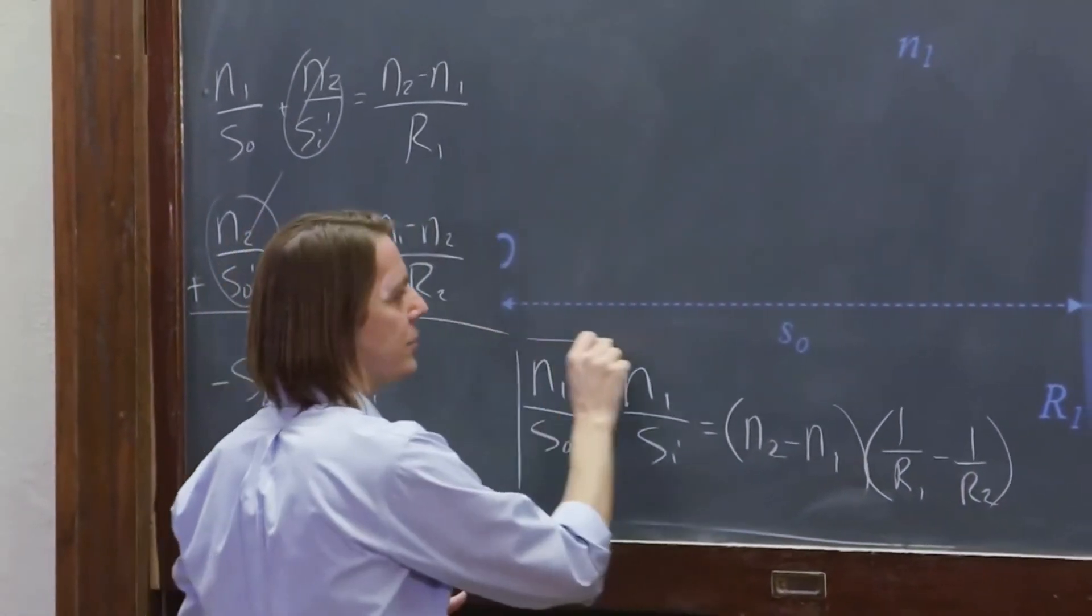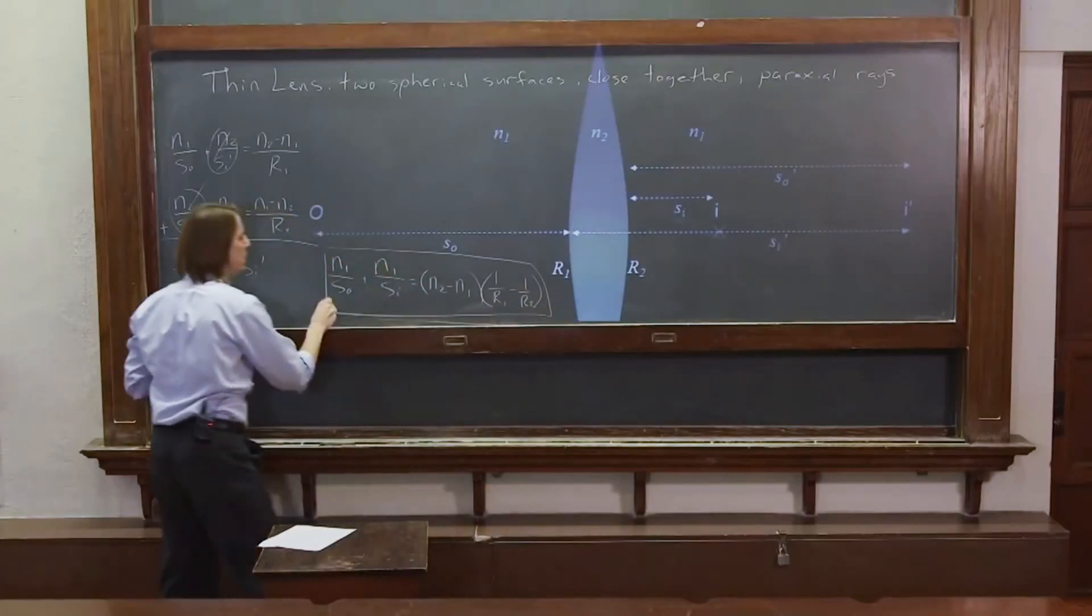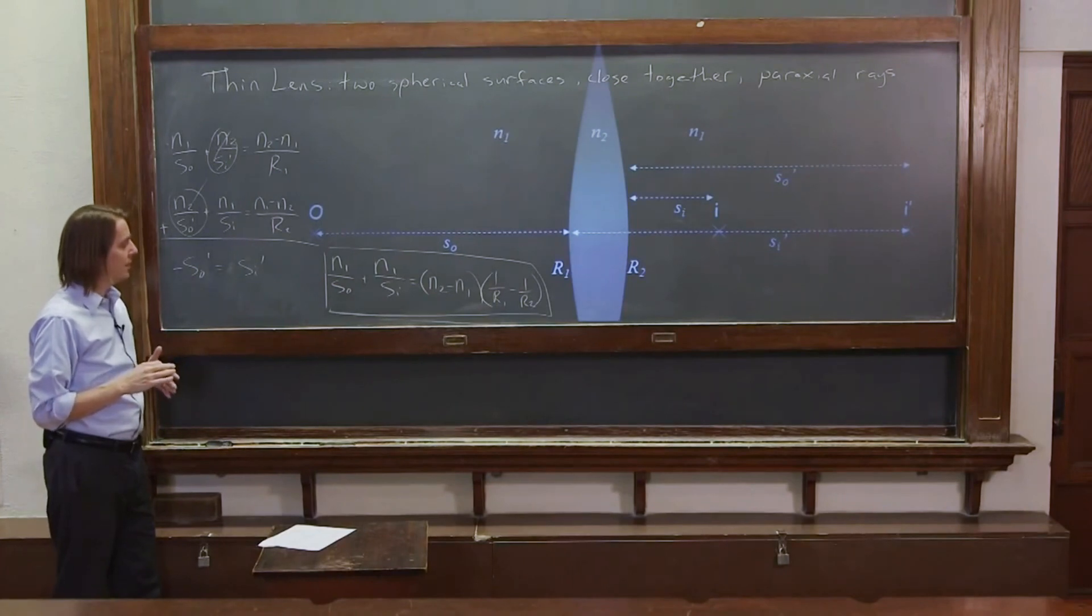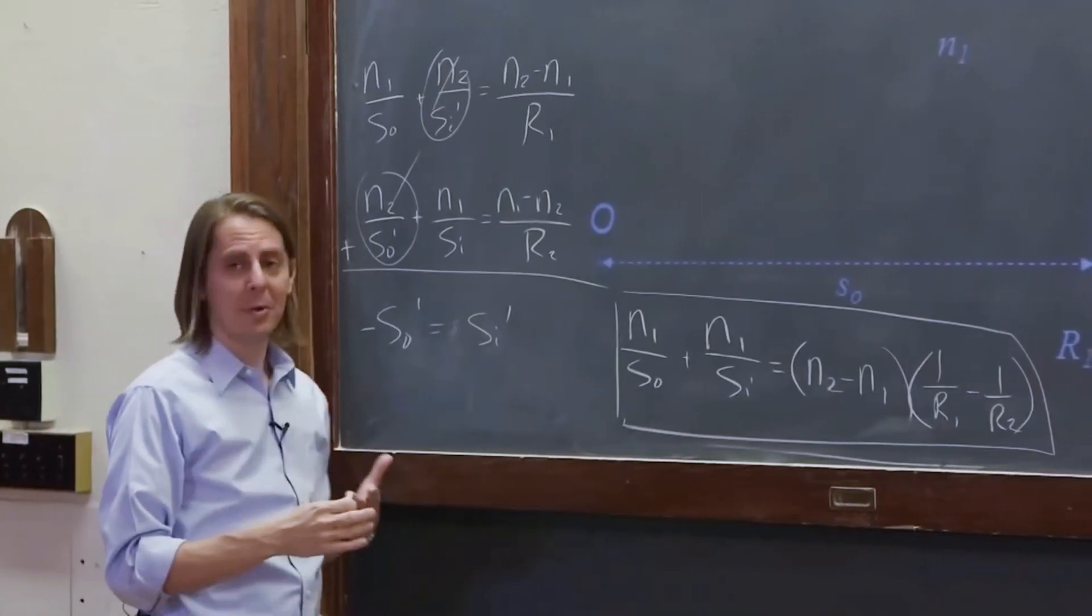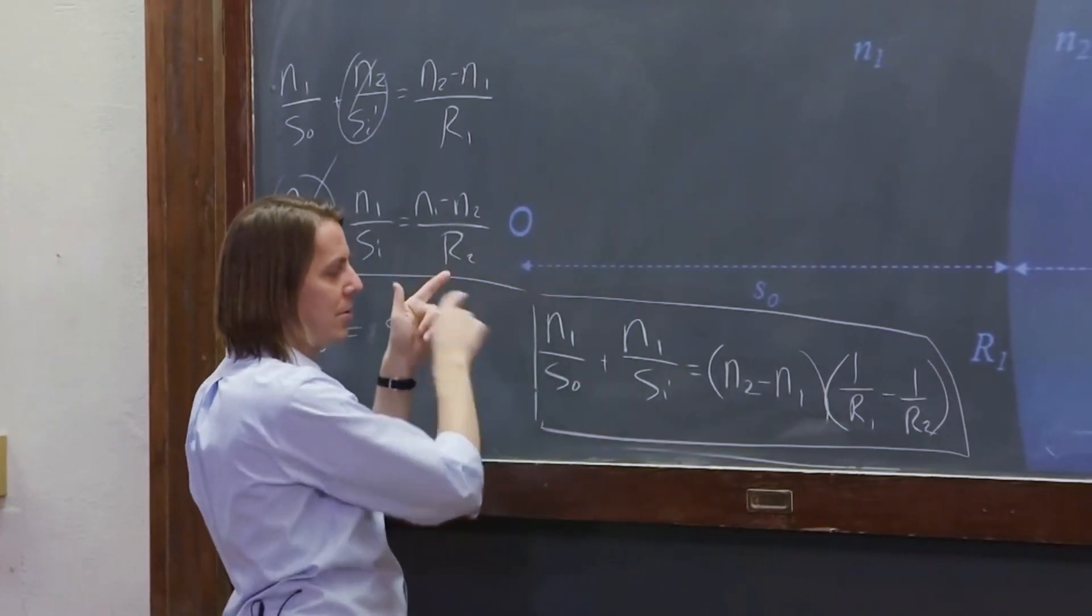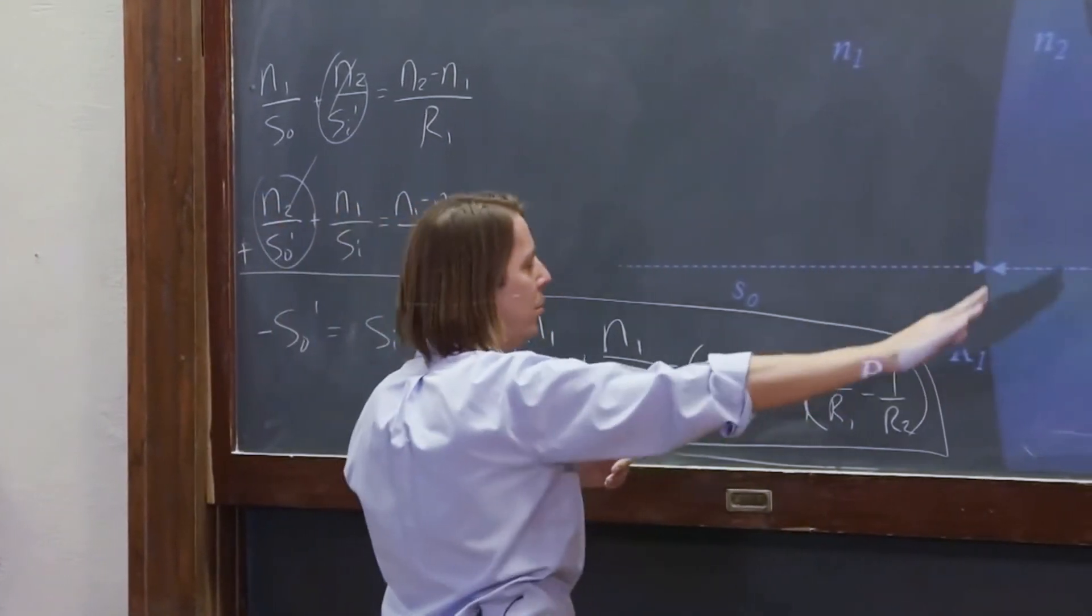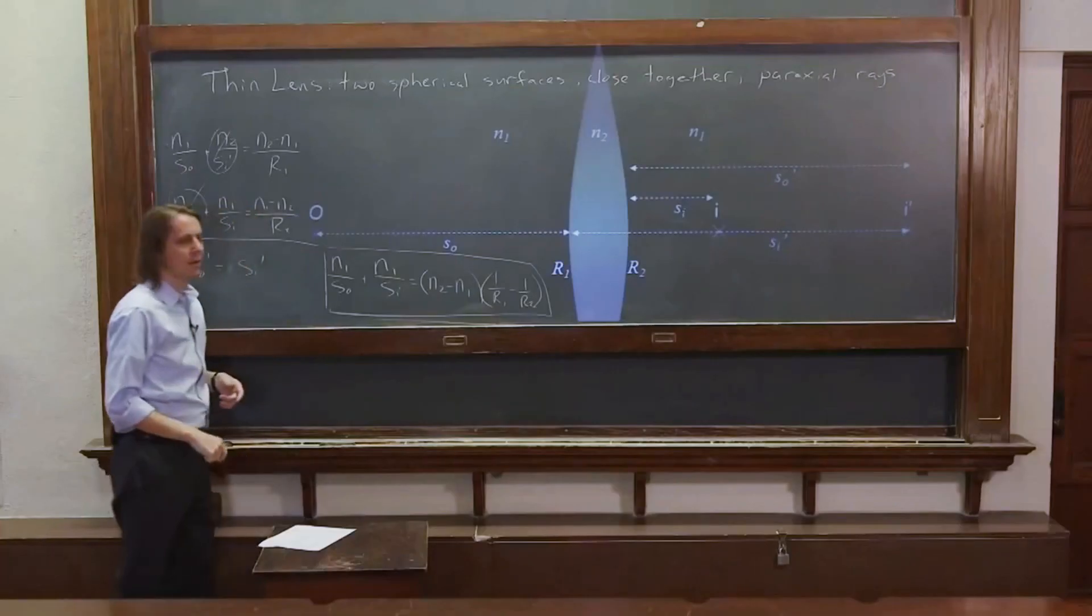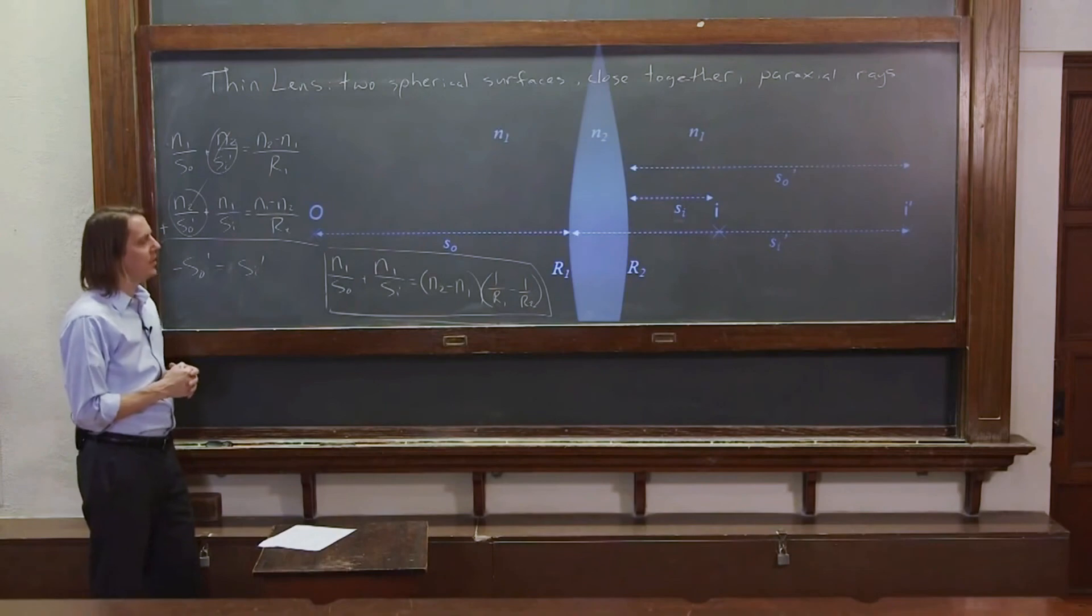So this equation describes how a thin lens, a thin spherical lens refracts a light and creates an image from an object. Because the only thing going in is where do you put the object? Somewhere out here. Where does the image end up? Somewhere in there. And then properties of the lens. The index of refraction and the two radii. So now we're going to see how that behaves.